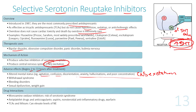SSRIs can also cause withdrawal syndrome if stopped abruptly. They can cause bleeding disorders, so care is needed when combined with antiplatelets or anticoagulants. Sexual dysfunction and weight gain are also possible, with weight gain linked to increased 5-HT — similar to the effect seen with atypical antipsychotics.